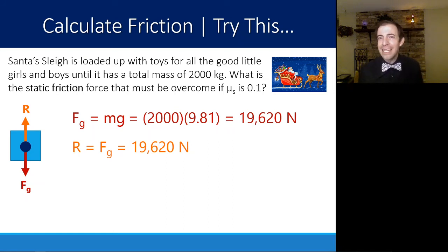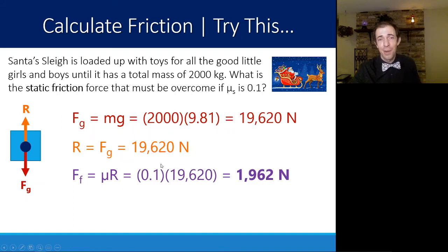If we know R, we can calculate what static friction would have to be to be overcome. μs is provided here, that's based on the surface of the sleigh as it reacts with the snow beneath it. So 0.1 times 19,620 will give us a force of friction of 1,962. That means the reindeer could pull with 500 newtons, sleigh wouldn't budge. Pull with 1,961 newtons and the sleigh wouldn't budge. As soon as it exceeds that threshold, then it will start to move.